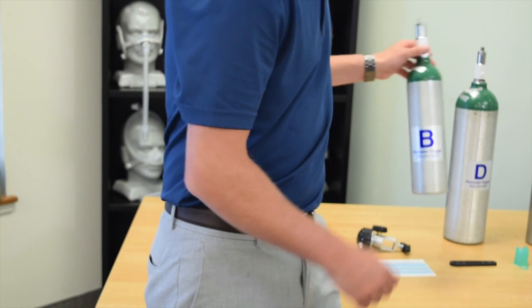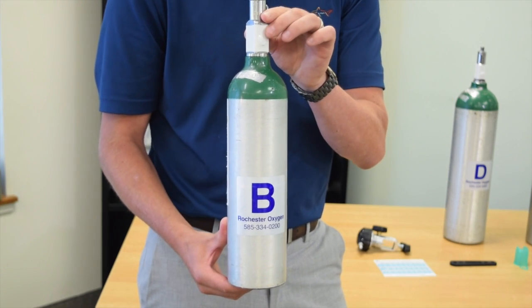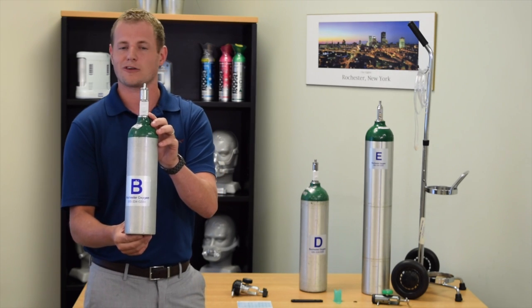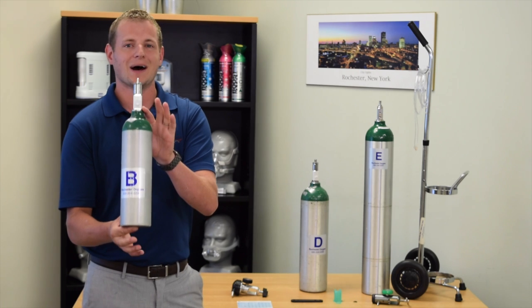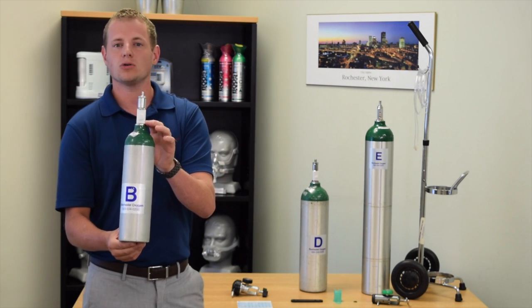The smallest tank is the B tank. This tank weighs in at about three and a half pounds and can run approximately four to six hours on a flow of two liters, but it requires a conserving device to use, which is a pulsed system.